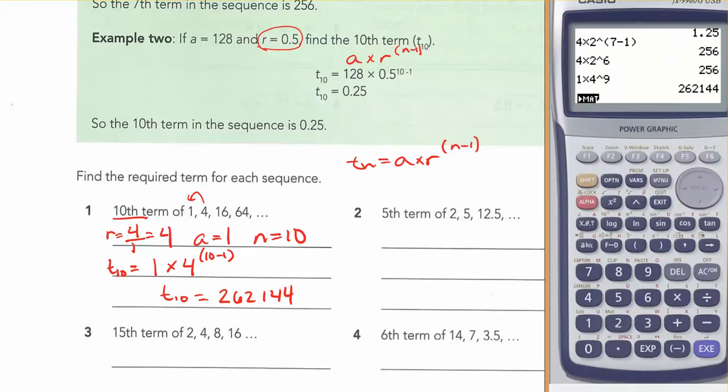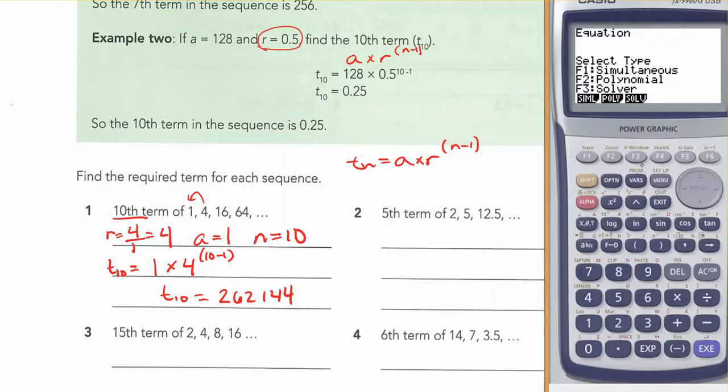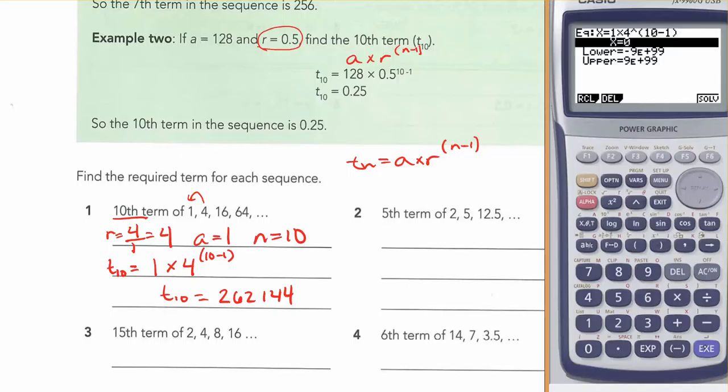If you're one of the students who's been deciding to use Solver for absolutely everything, that's okay, it's your choice. But just keep in mind, just like before, you would start with x is equal to 1 times 4 to the power of bracket 10 minus 1 bracket. And solve. And there's your answer again.